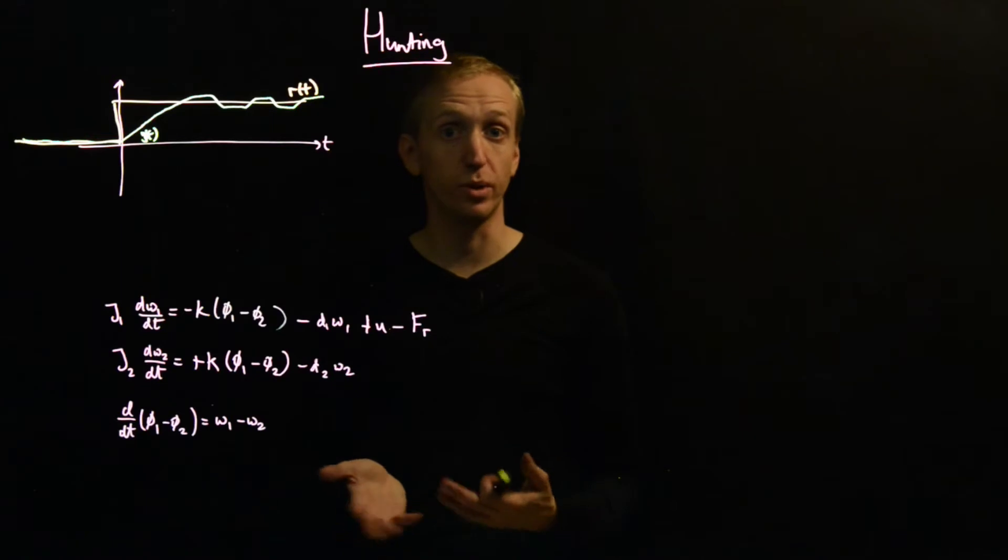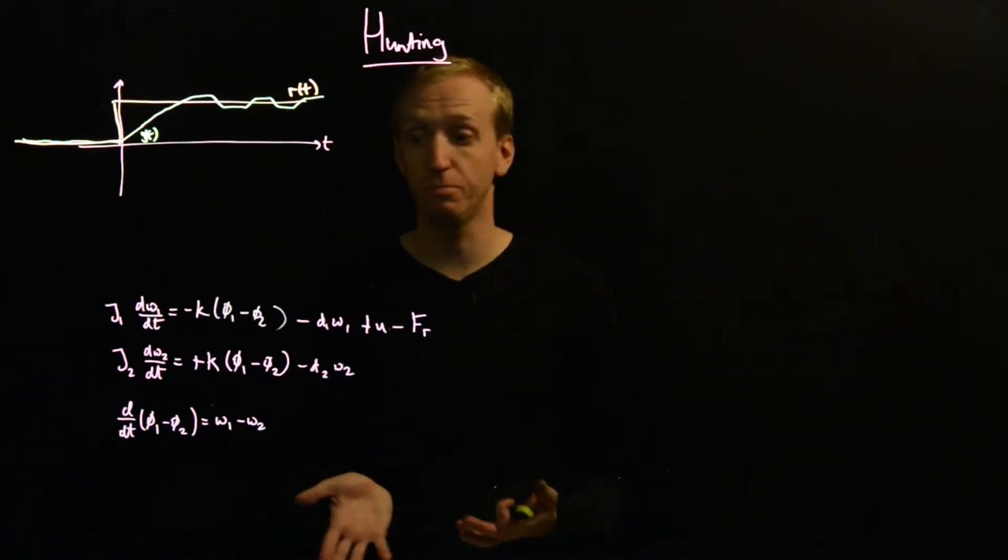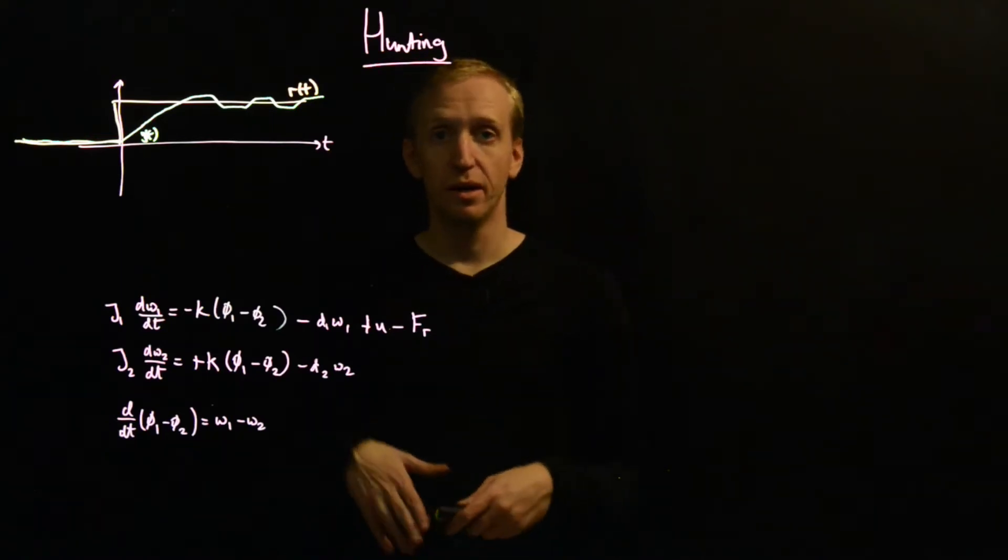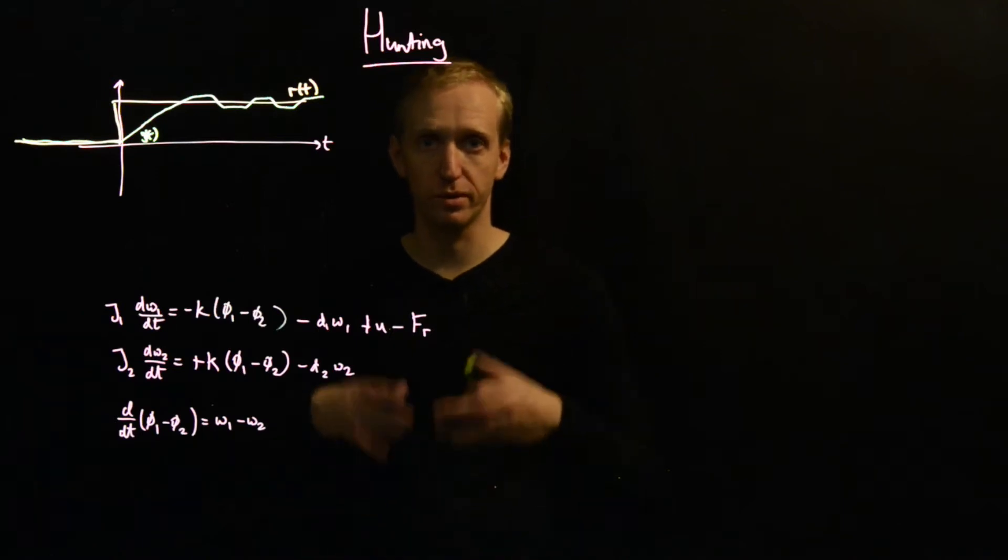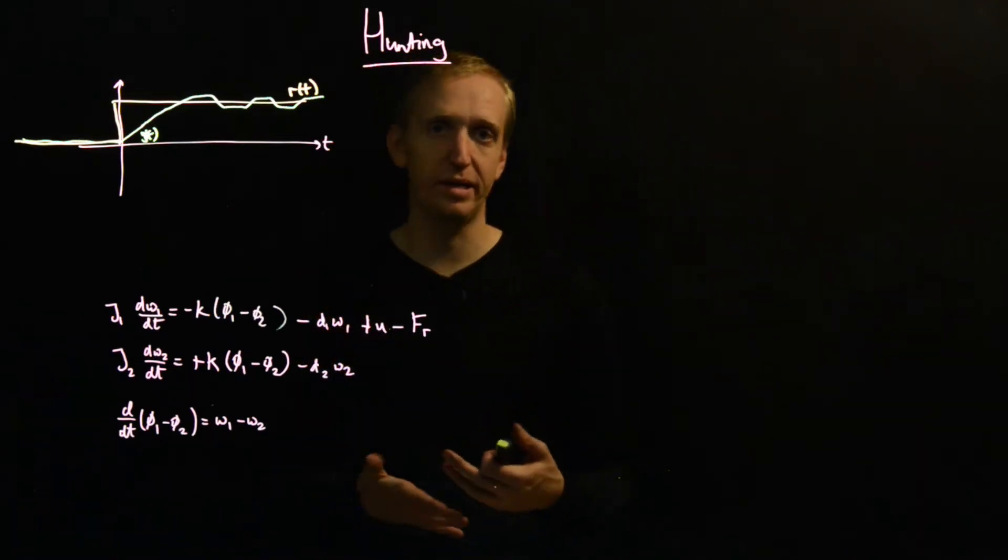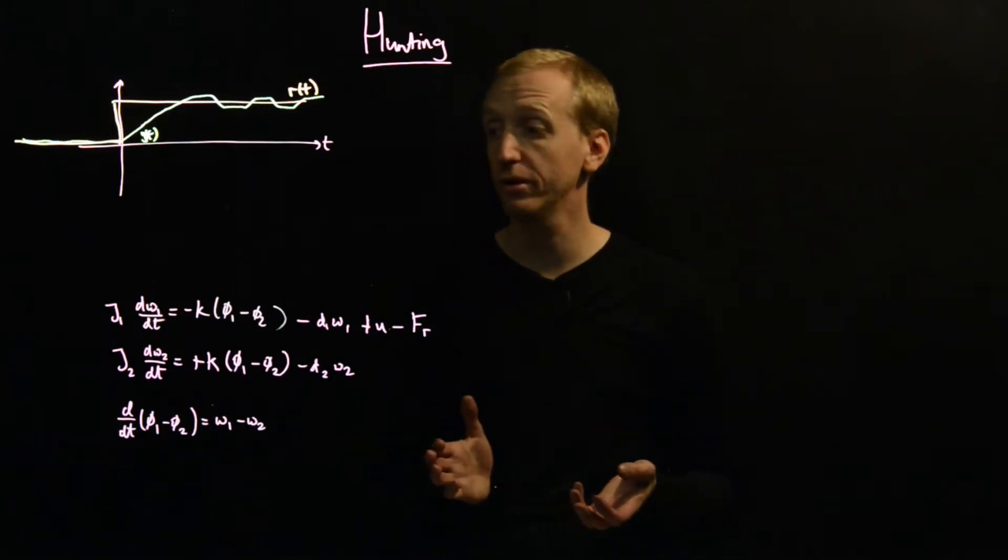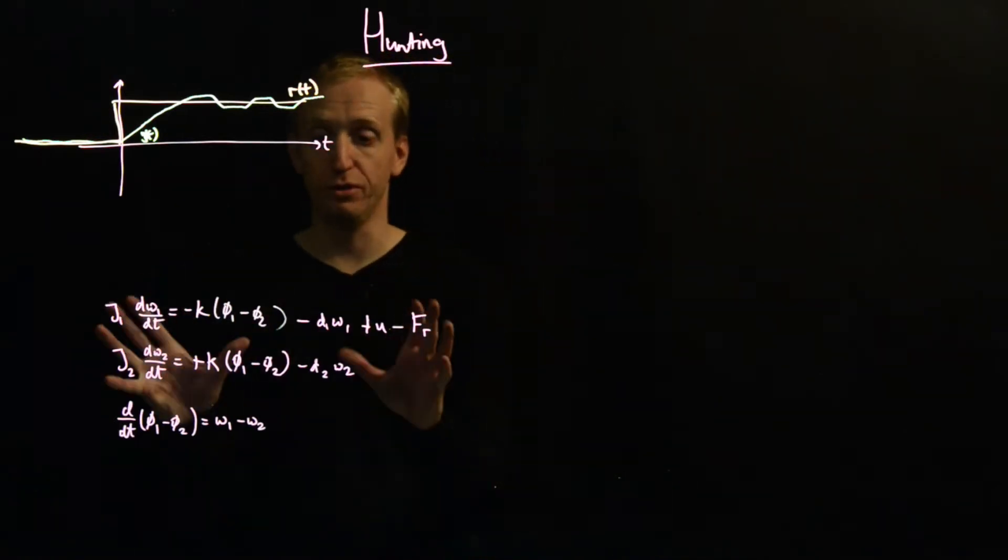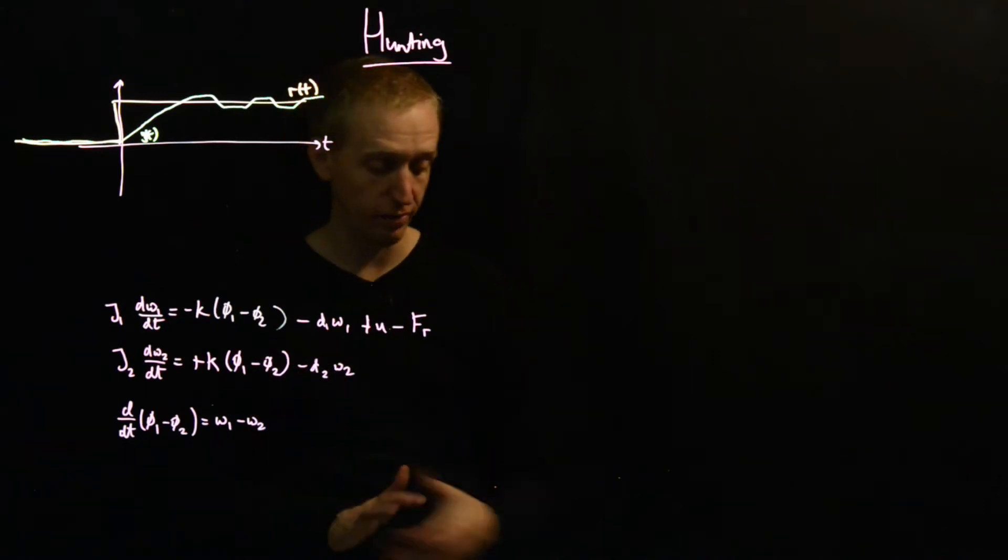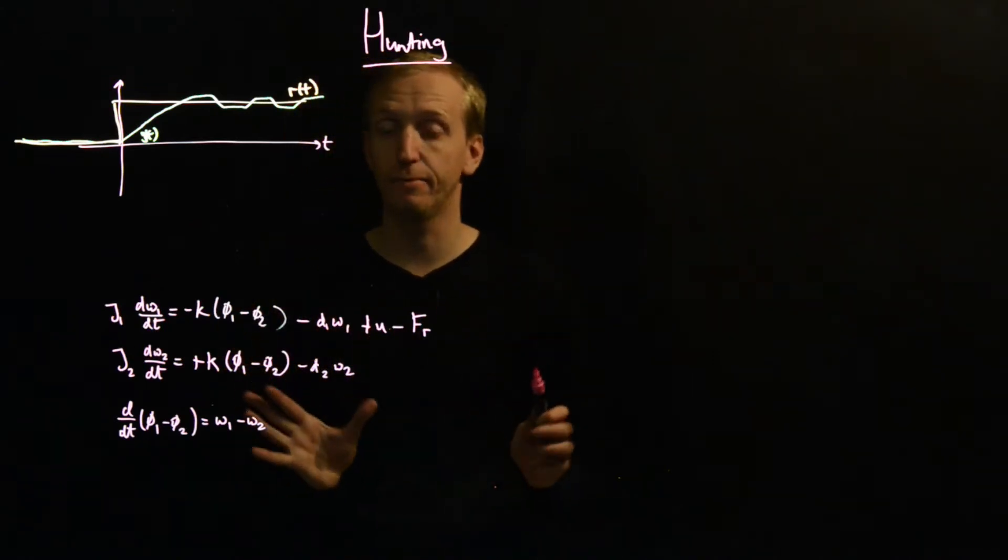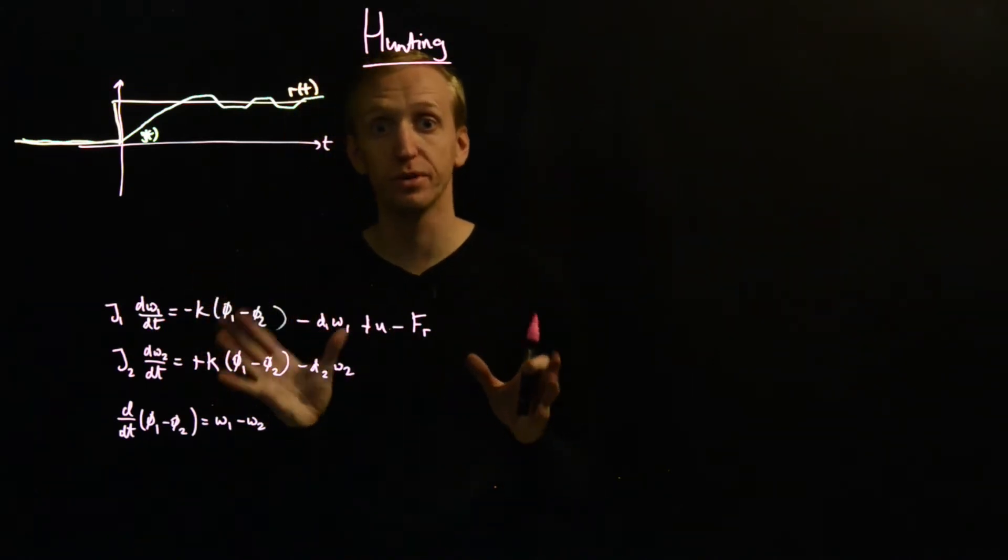And this is one of the things that can be induced by having friction in your models. And I now just want to sort of talk through at a high level how we might explain this with the kind of describing function tools that we've seen earlier in the course. And I want to do it within the framework of a simple system modeling, what's called a flexible servo.